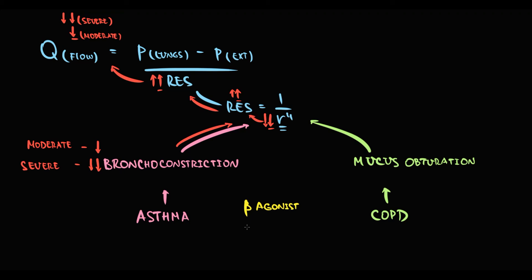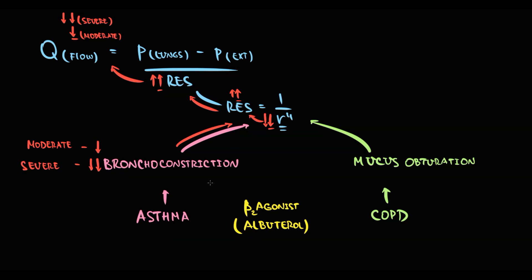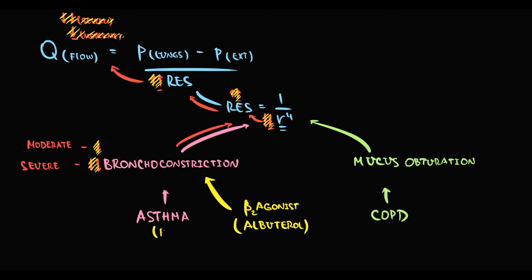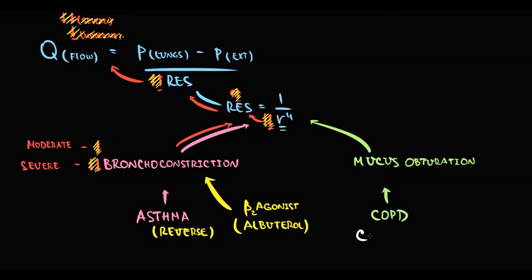The major difference between asthma and COPD is that in asthma, because the obstruction is caused by bronchoconstriction, we can reverse it with bronchodilation. But in COPD, because obstruction is caused by mucus, we cannot reverse it. So once we determine an obstructive pattern, we give the patient an inhaler with albuterol, which is a beta-2 adrenergic agonist. If it is asthma, after intake of albuterol bronchodilation occurs, airway radius increases, resistance decreases, and airflow increases — forced expiratory volume in one second will increase by 15%, for example. In this case we can say it is asthma. But if there is no improvement in forced expiratory volume in one second, then it is probably COPD.